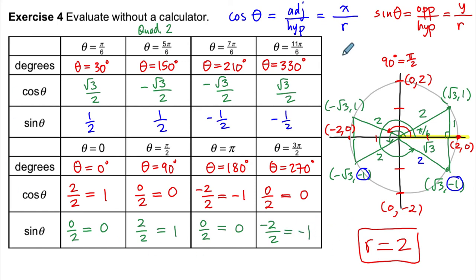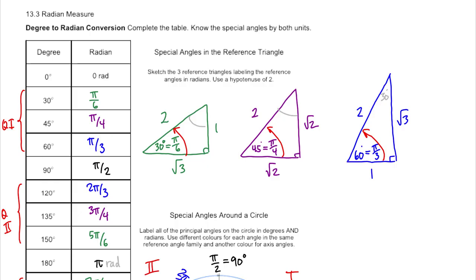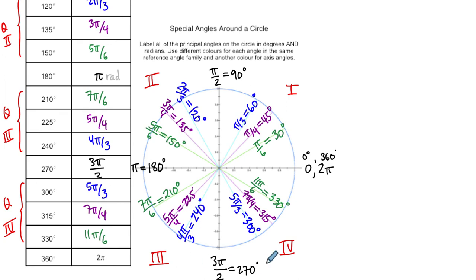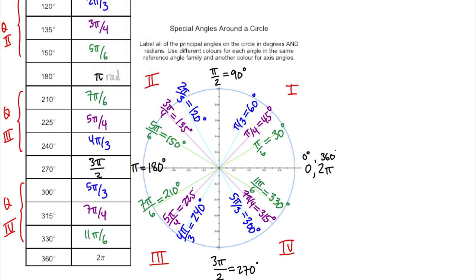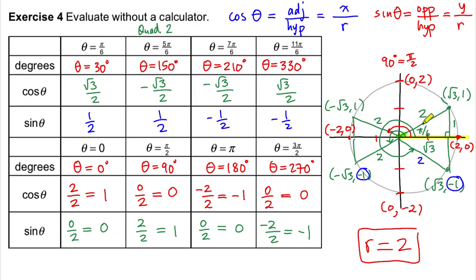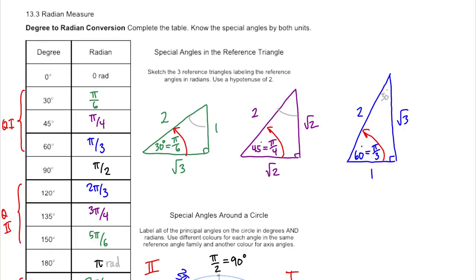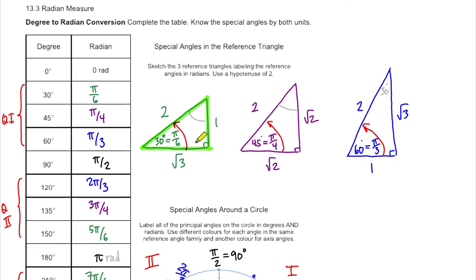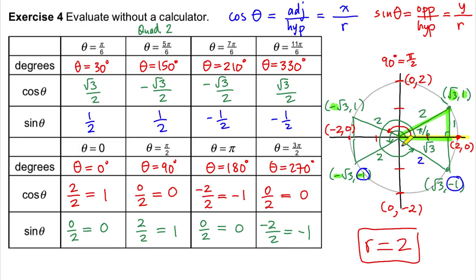This is how we evaluate sine, cosine, and other trig functions for the special angles without a calculator. We want a good understanding of which angles are connected — we see families of triangles. The reference triangle in quadrant 1 gets reflected into quadrants 2, 3, and 4, with sign changes in x and/or y coordinates as we reflect. We only need to know the three special triangles (30-60-90, 45-45-90) from memory, and we layer the information to work out values without a calculator.